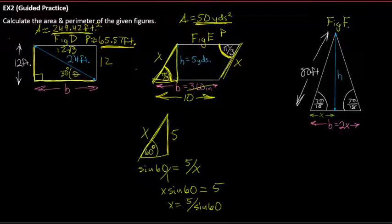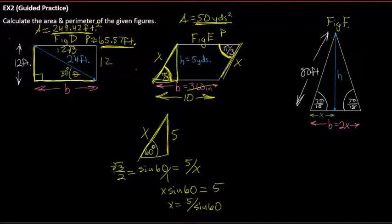Throwing 5/sin(60) into the calculator gives approximately 5.77. Using the exact form: sine of 60 is √3/2, so x = 10√3/3. Both methods give the same answer.